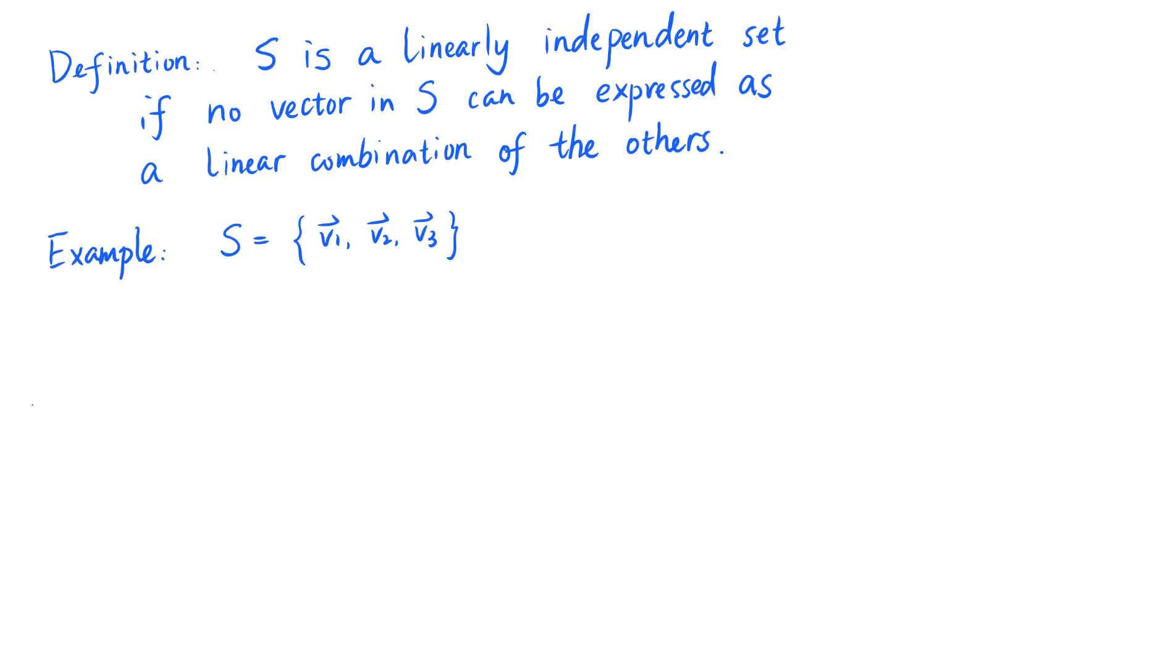then S is a linearly independent set if the following three statements are true. One, v sub 1 is not a linear combination of v sub 2 and v sub 3.